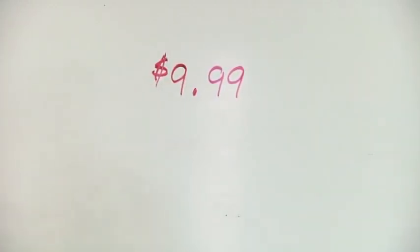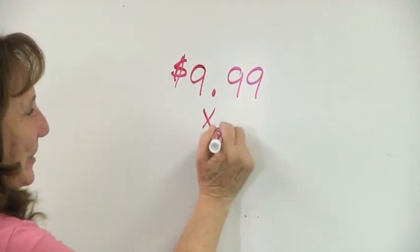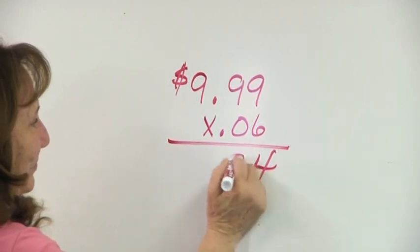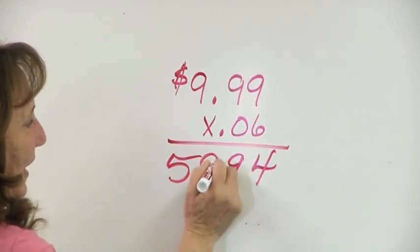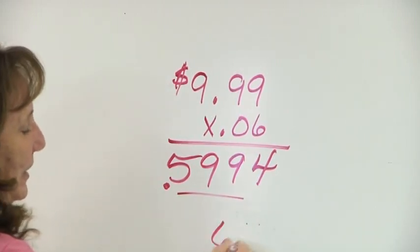If the sales tax was about 6% in your area, change it into a decimal. Go ahead and multiply it by that. And you would learn that your sales tax was approximately about $0.60.